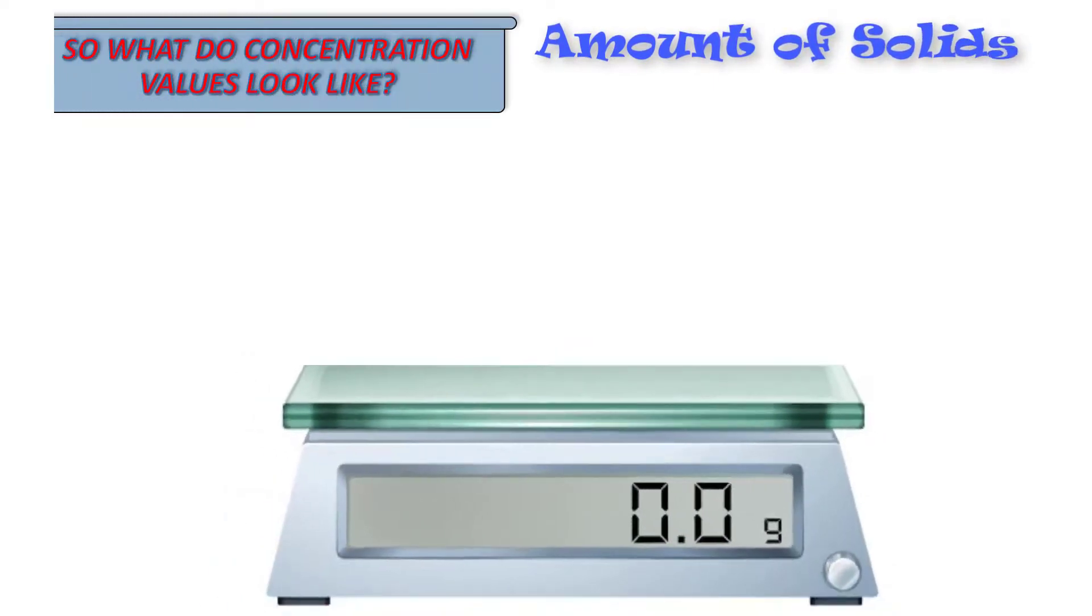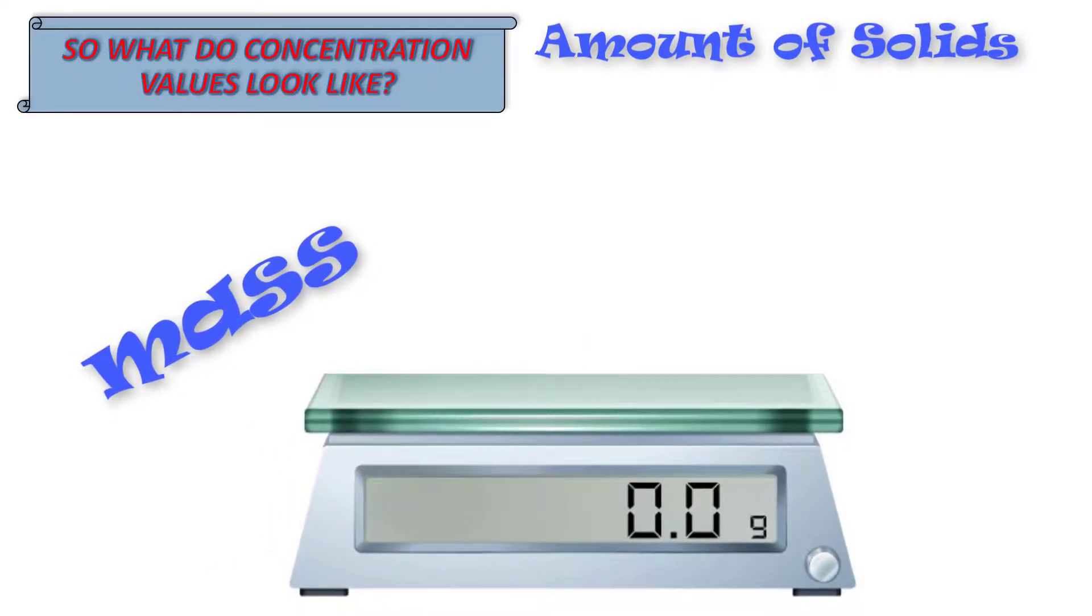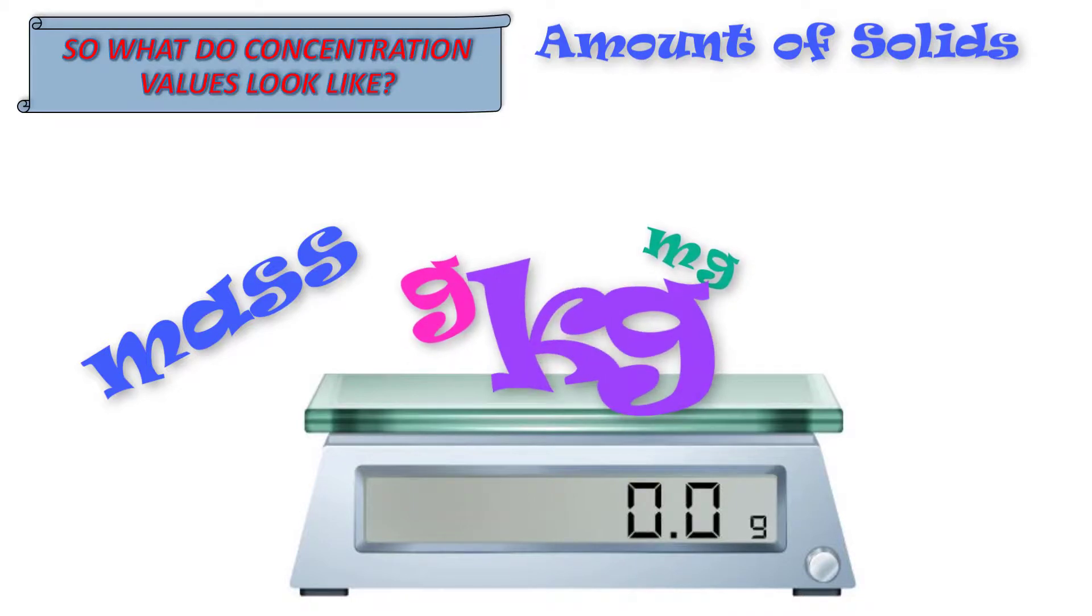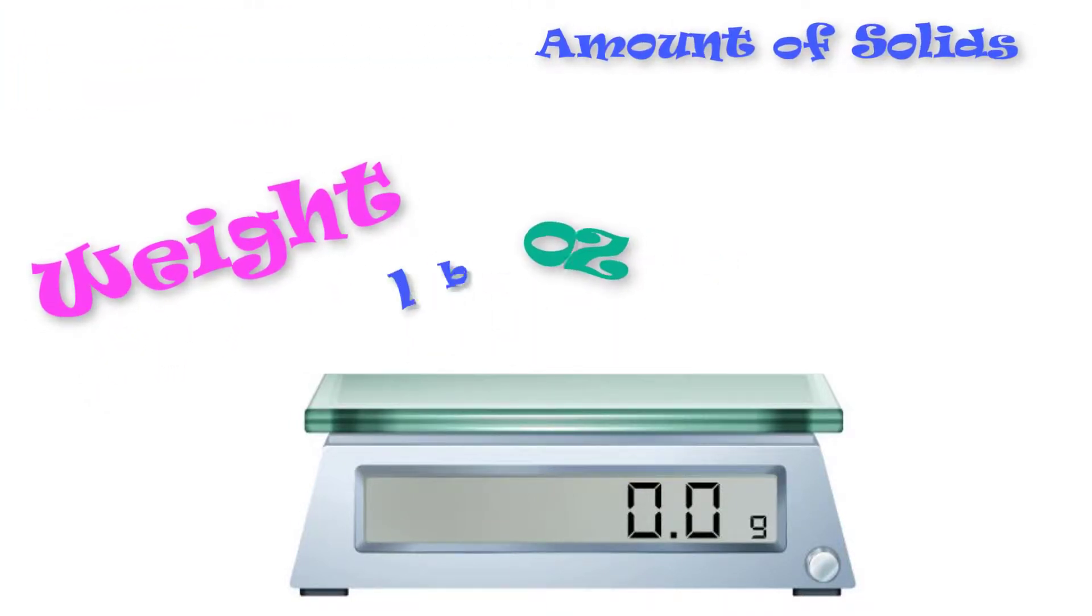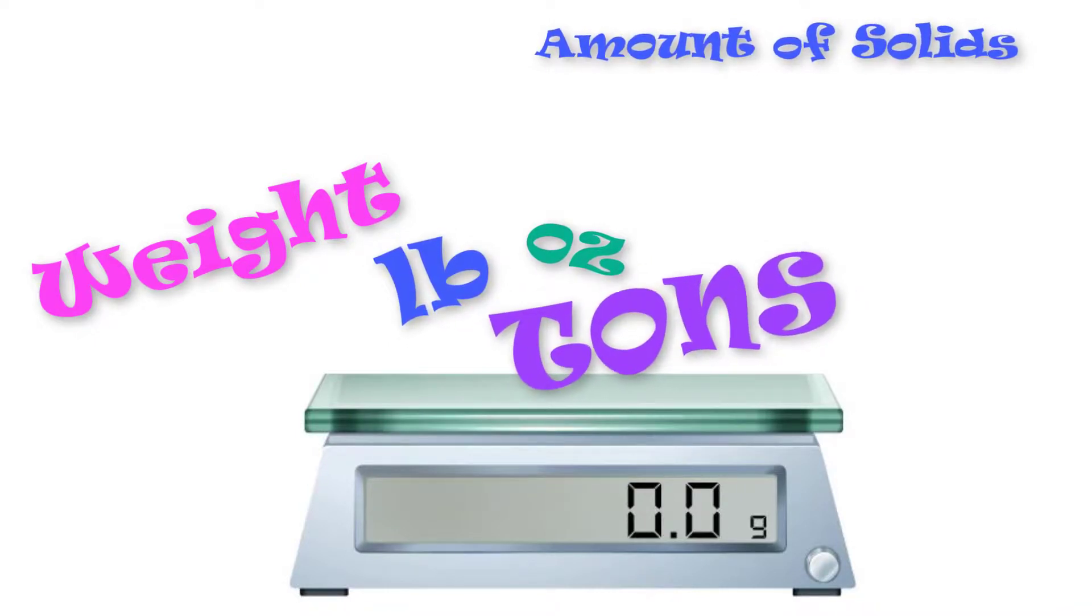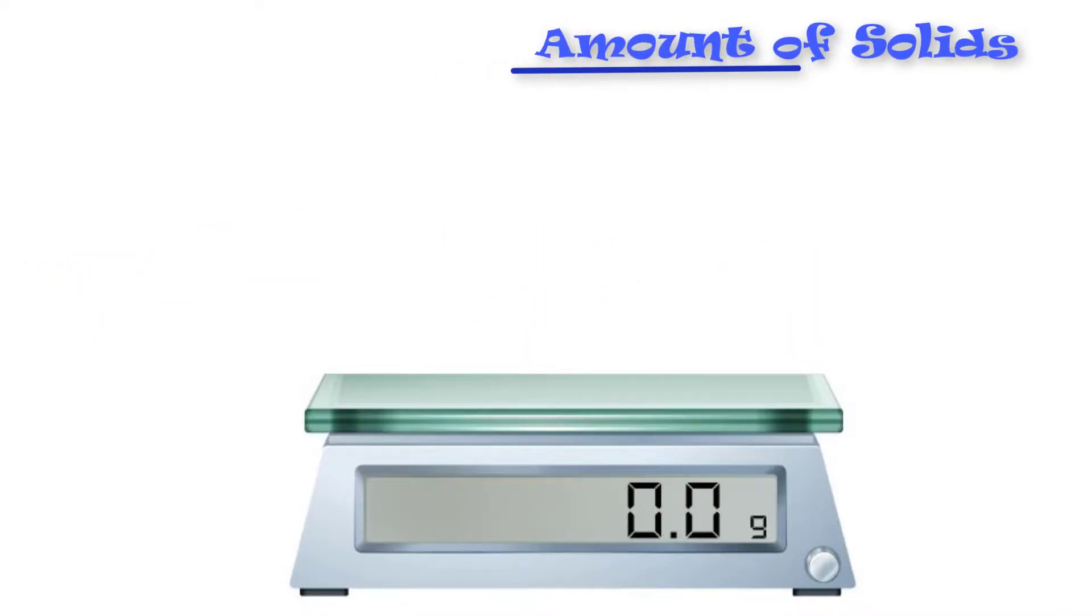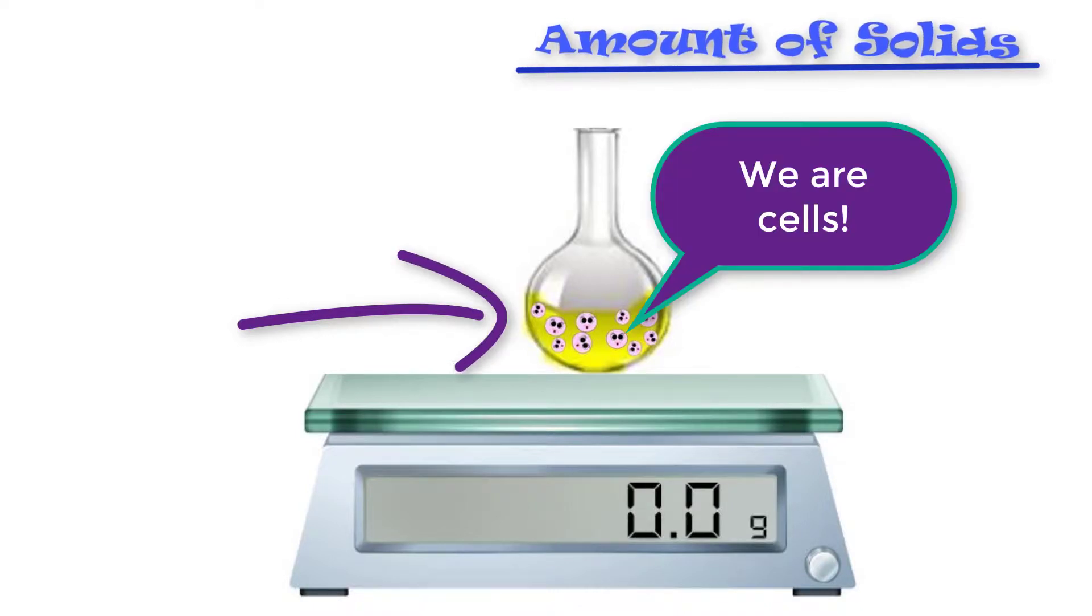The top number of our ratio is the amount of solids. This can be measured as mass, like grams, milligrams, kilograms, etc., or in weight, like ounces, pounds, or tons. In our case, we will be measuring the individual numbers of cells in our solution.